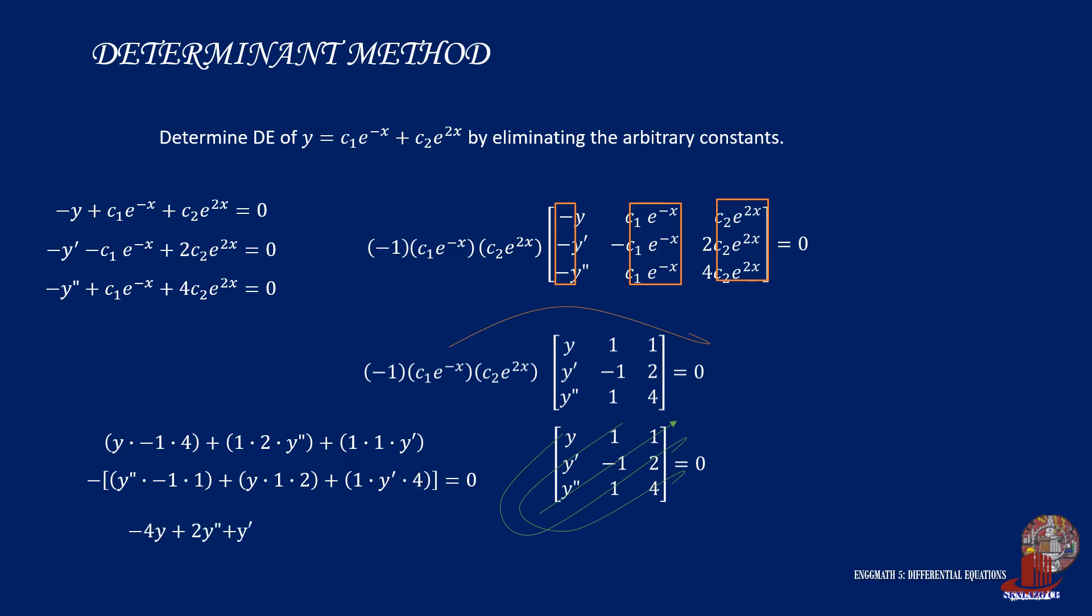So simplify the terms to have negative 4y plus 2y double prime plus y prime plus y double prime minus 2y minus 4y prime is equal to zero. Collecting similar terms, we would have negative 6y minus 3y prime plus 3y double prime is equal to zero. Divide everything by negative 3, so we have the simplified differential equation 2y plus y prime minus y double prime is equal to zero.